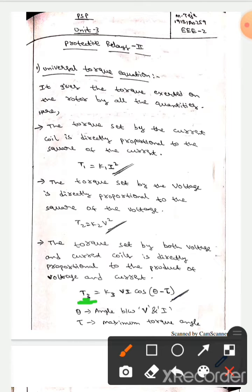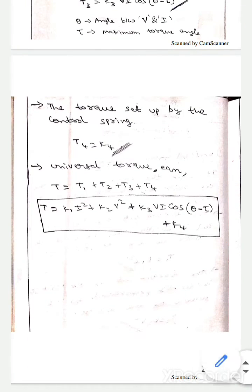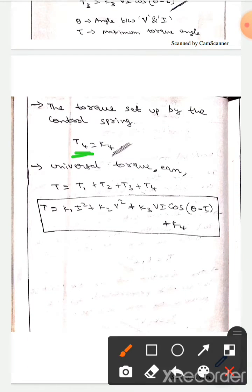Whereas T3, it is the torque set by both voltage and current coils and it is directly proportional to the product of voltage and current and also cos of theta minus tau. Here theta is the angle between v and i, whereas tau is the maximum torque. Here T4, it is the torque set by the control spring and it equals to k4.